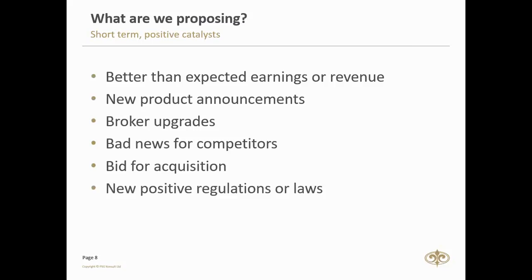The sixth short-term positive catalyst is new positive regulation or law. Using Aspen as an example, when the antiretroviral HIV drugs came on board — Aspen's main business is generics — any new law improving their bottom line would have benefited them. Another hypothetical example: if the government passed a new law increasing taxes on online shopping, many people would switch from online shopping to buying in-store, which would benefit retailers. Those are the kinds of rules and regulations that can be positive for a company.